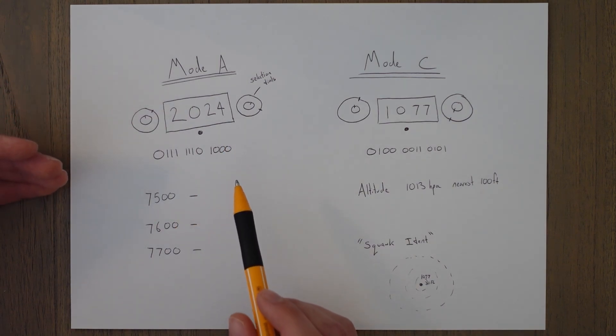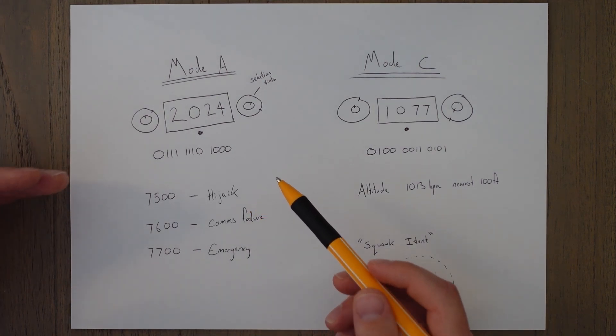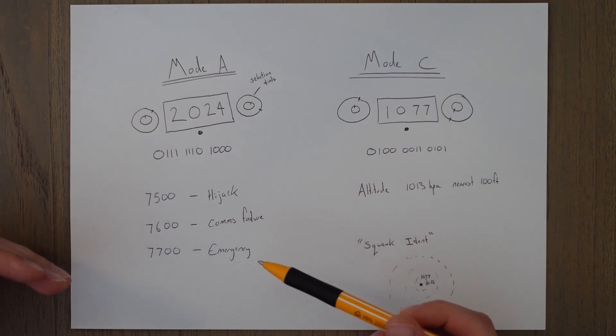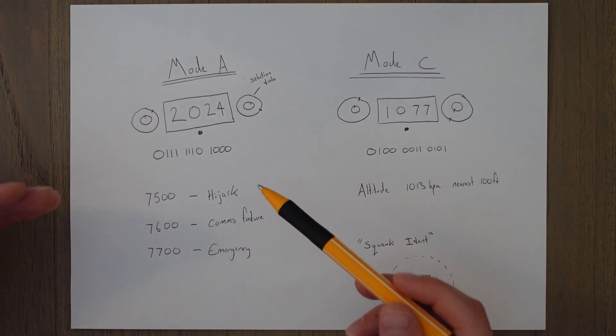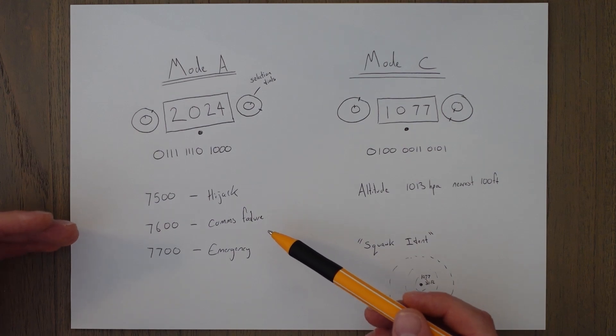They are 7500, 7600, and 7700. 75 standing for hijack, 76 standing for communication failure, and 77 is for emergencies. That's what I was getting at in the intro. 75 taken alive, 76 the box of tricks, 77 don't go to heaven.